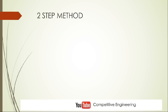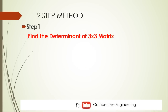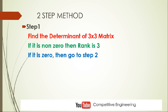This is basically a two-step method. The first step is: when you are given a matrix, find its determinant. If you get a nonzero determinant, then the rank of the matrix is 3 — the problem is solved at this stage. If you get a zero determinant, then you have to go to step number two.